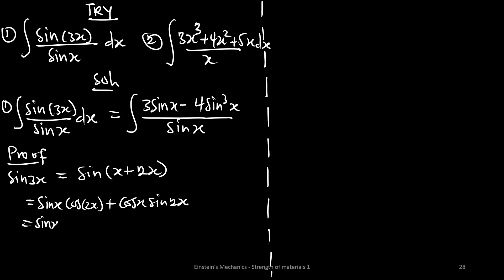So we have sin(x)cos(2x), and cos(2x) has its own identity. We want to expand cos(2x) in terms of sine — the identity is cos(2x) = 1 minus 2sin²(x). We want to get everything in terms of sine.